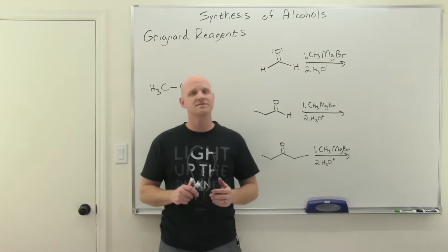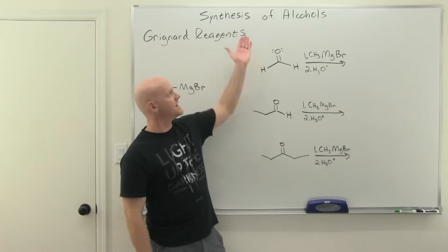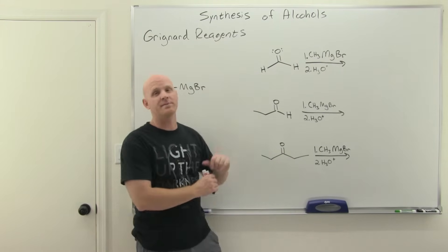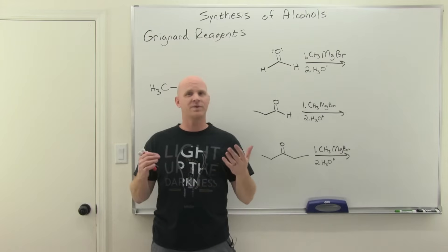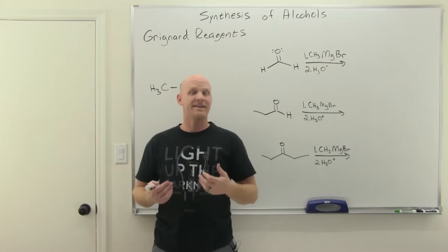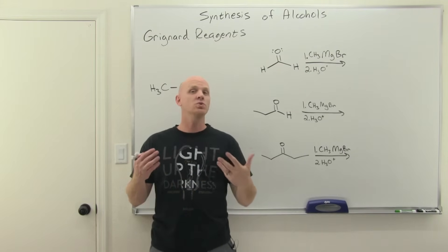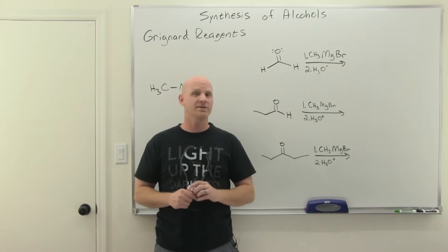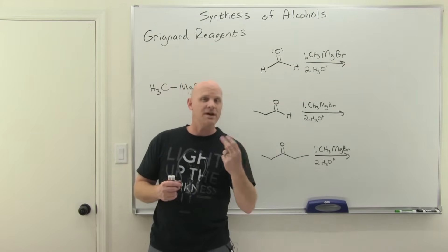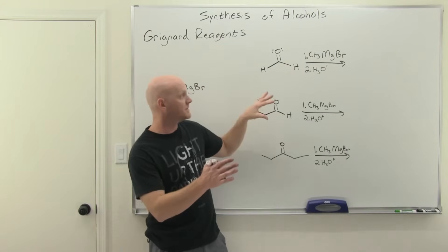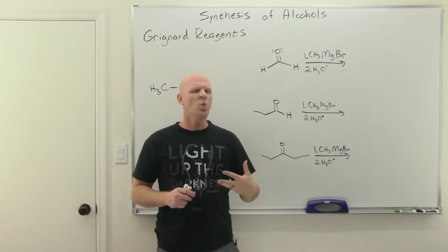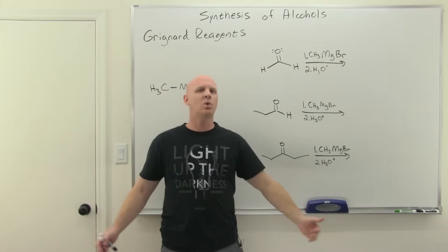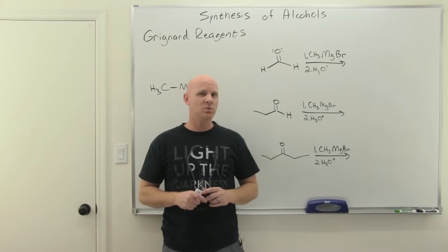Grignard reagents are the topic of this lesson on the synthesis of alcohols. Grignard reagents are the equivalent of a carbanion — they allow us to make a new carbon-carbon bond, something we don't have many ways of doing. This is the second major way you've learned, and probably one of the top two reactions you'll learn in all of organic chemistry.